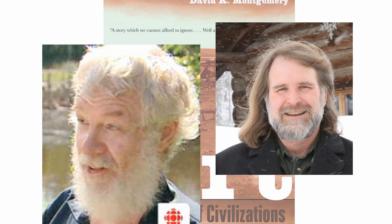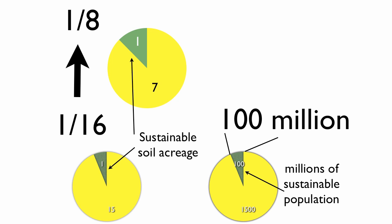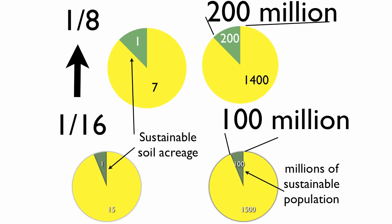They could be wrong. Suppose soil could regenerate twice as fast. That is, you can use one-eighth of the arable land instead of one-sixteenth. This would double the soil available for growing food. It would double the number of people who could sustainably be supported to 200 million.